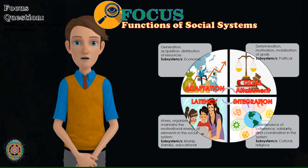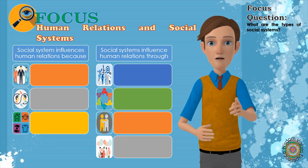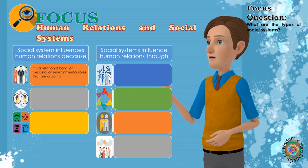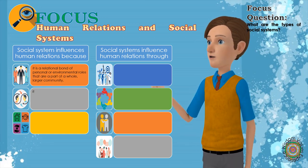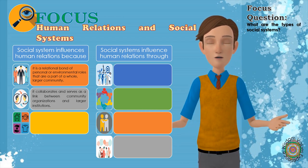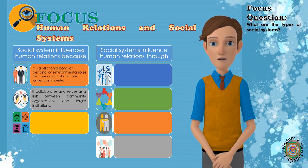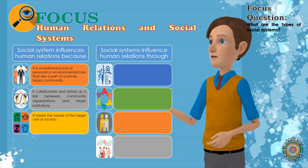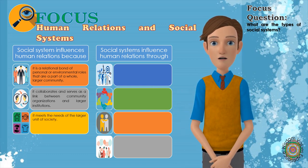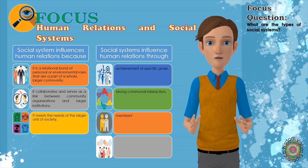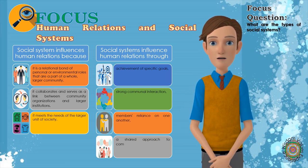Social system influences human relations because it is a relational bond of personal or environmental roles that are a part of a whole, larger community. Furthermore, social systems collaborate and serve as a link between community organizations and larger institutions. It has a significant impact on human relations because the social system meets the needs of the larger unit of society. Social systems influence human relations through their characteristics such as achievement of specific goals, strong communal interaction, members' reliance on one another, and a shared approach to communication with a vocabulary specific to their system.